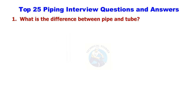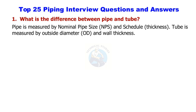What is the difference between pipe and tube? Pipe is measured by nominal pipe size (NPS) and schedule thickness. Tube is measured by outside diameter (OD) and wall thickness.